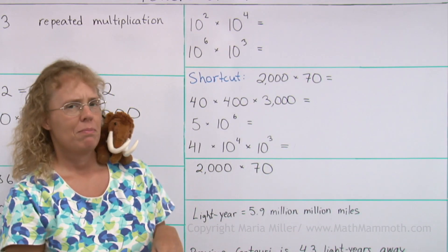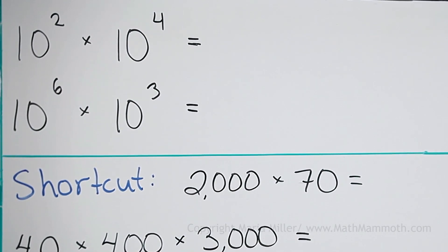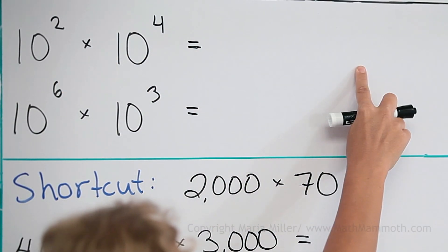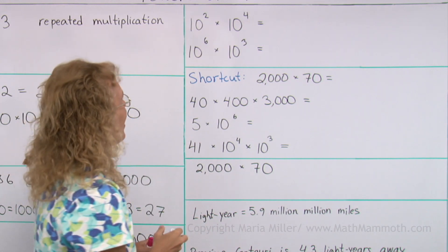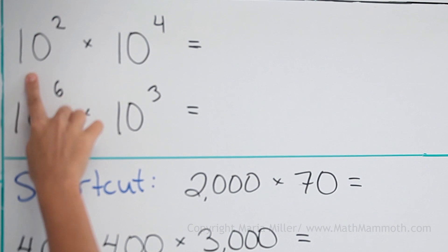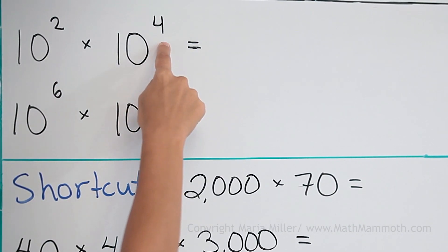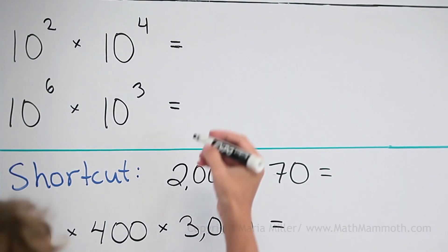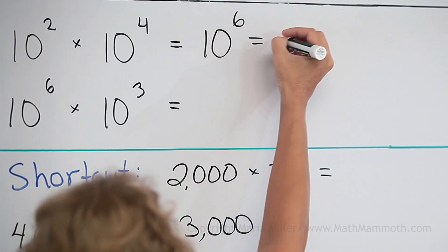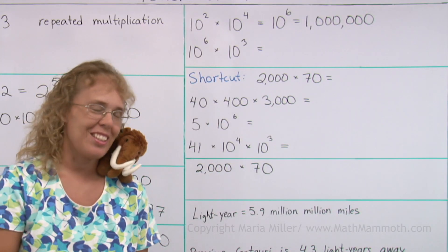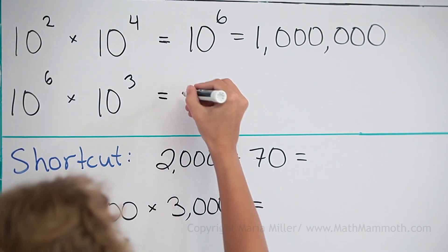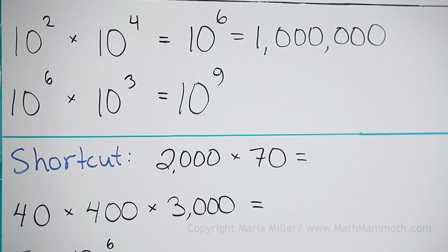Let's try this: 10 squared times 10 to the fourth power. I could write this out as 100 times 10,000, but there's another shortcut. 10 multiplied by itself two times, times 10 multiplied by itself four times — in total we get 10 multiplied by itself six times: 10 to the sixth power. Similarly, 10 cubed times 10 to the sixth gives 10 to the ninth power.